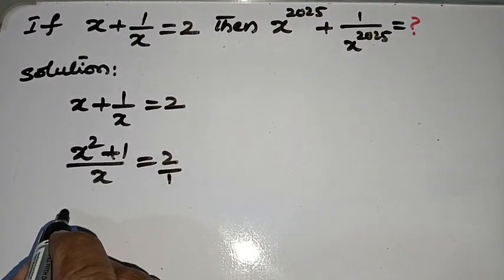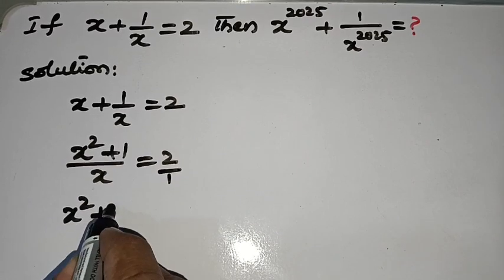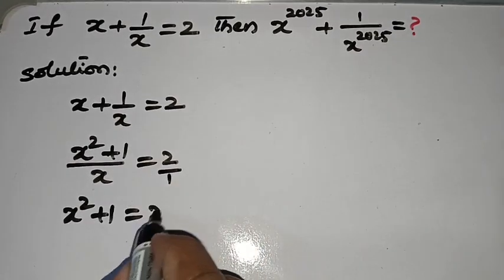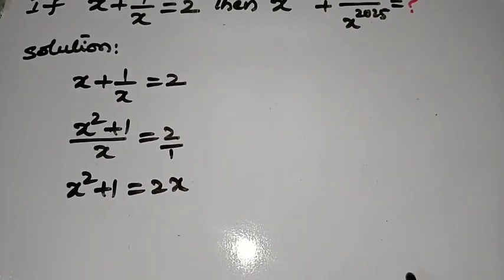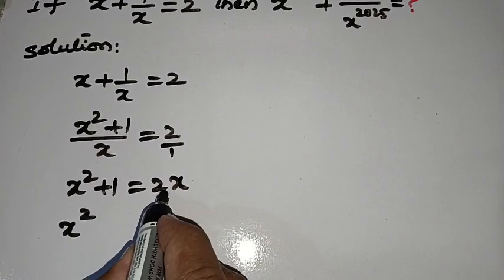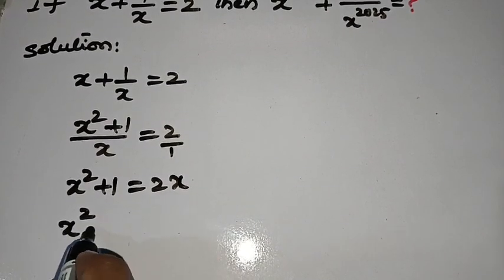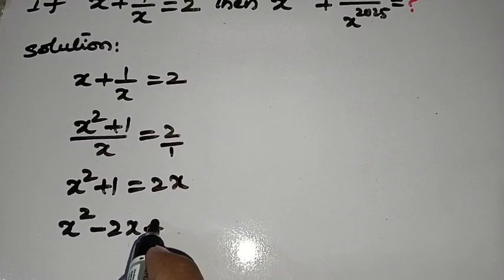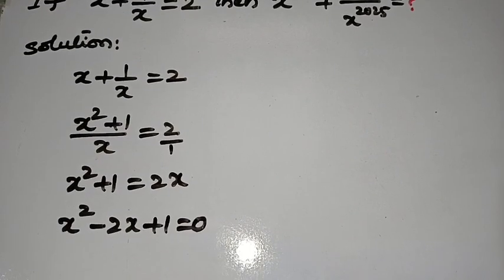Upon cross multiplication, 1 into x square plus 1 is x square plus 1 and 2 into x is 2x. Bringing all terms to the left hand side and making the right hand side equal to 0, we get x square minus 2x plus 1 is equal to 0.